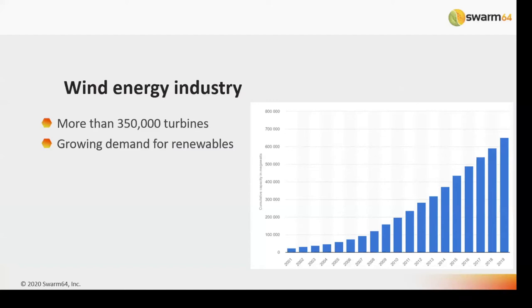Machine learning for wind energy — first, to give you some insight: the wind industry is growing. We have more than 350,000 turbines globally installed and more than 650,000 megawatts in installed capacity. Because of climate change, we need to ensure that wind energy stays competitive, as many believe it is a good alternative. And in order to ensure that, we need to think about how to reduce costs.